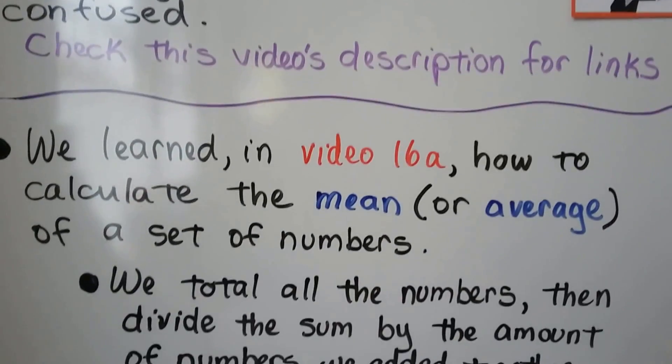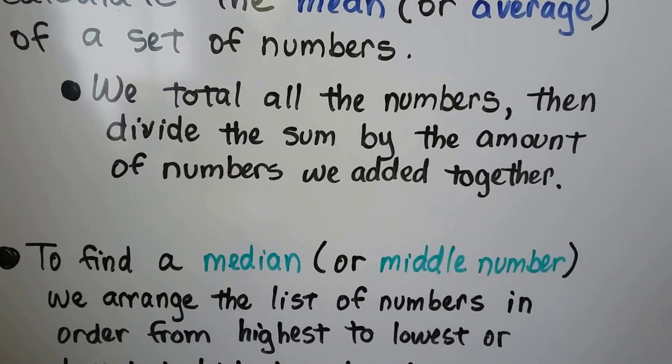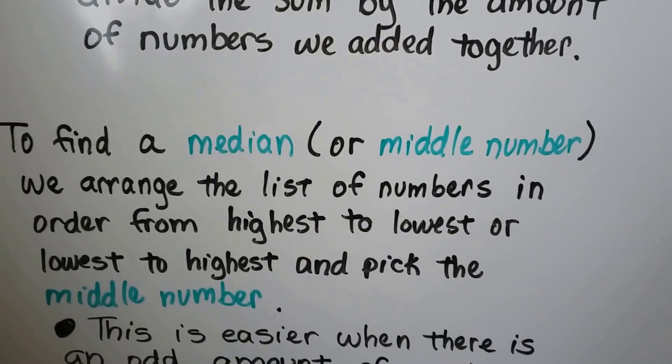We learned in video 16a how to calculate the mean or average of a set of numbers. We total all the numbers, then divide the sum by the amount of numbers we added together.